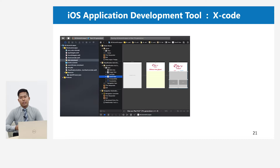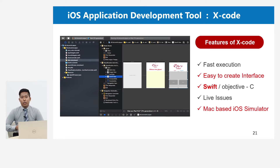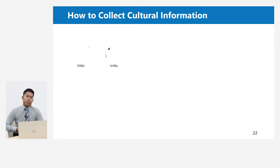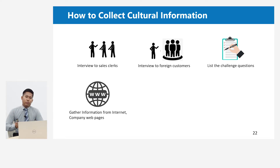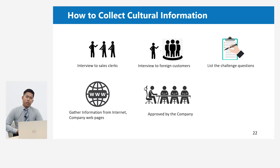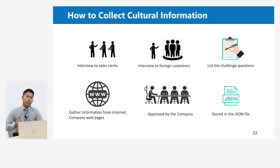I tested my model accuracy on the mobile application. The classification accuracy is over 90% correctly classified. That's why I was satisfied with the accuracy and started to develop the iOS application using Xcode, because of its features: fast execution, easy interface creation, and Swift language. I used the Xcode iOS simulator so we can simulate iOS or iPad device without using a physical mobile phone. The next step was collecting cultural information. I interviewed the sales staff to understand what kind of information they really need, and also interviewed foreign customers to understand their requirements. Then I made a list of questions, collected information from the internet and the company website, which was approved by the company supervisor. Finally, I stored that information in a JSON file to integrate with the mobile application.